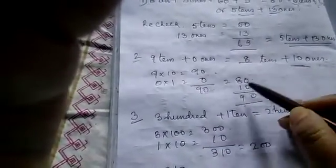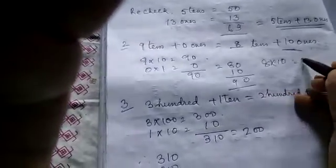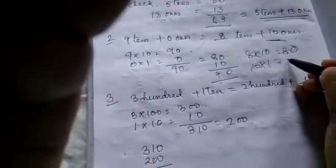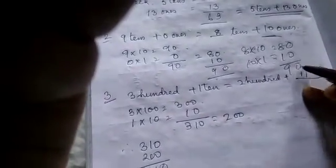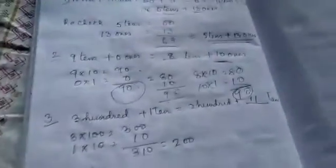So 8 tens plus 10 ones. 8 tens means 8 into 10 equals to 80 and 10 ones, 10 into 1, that means 10. Equals to 90. See this 90 and this 90 is same. Hope it is clear to you.